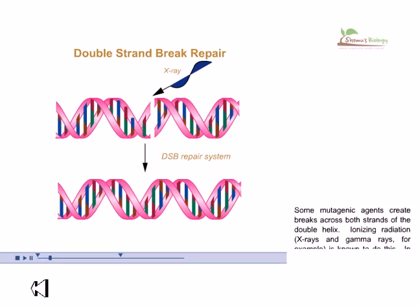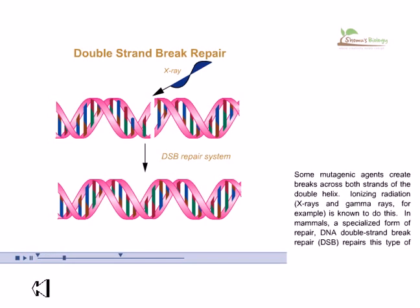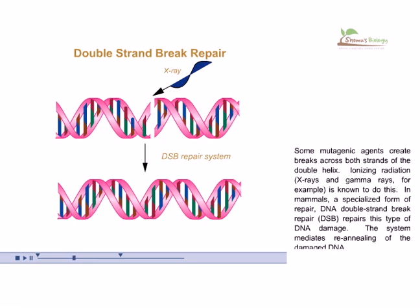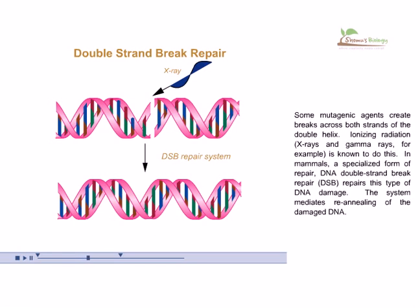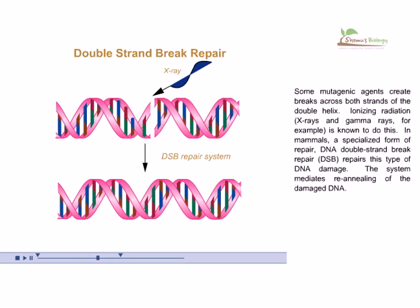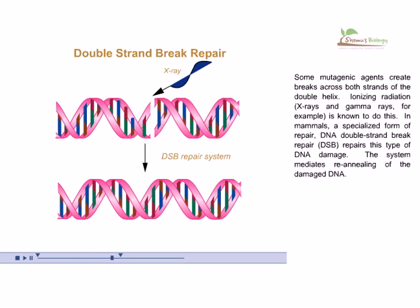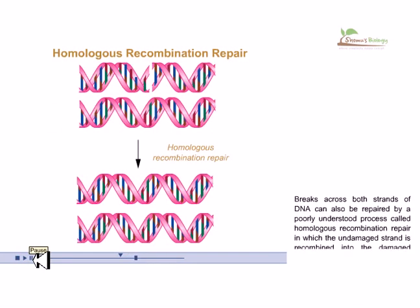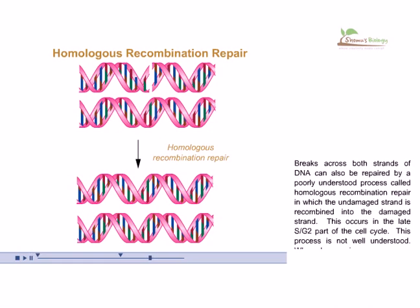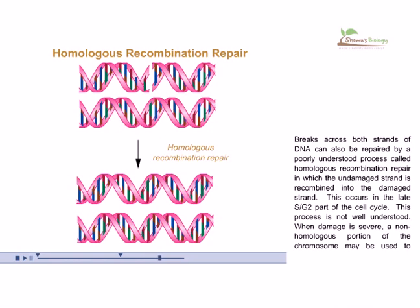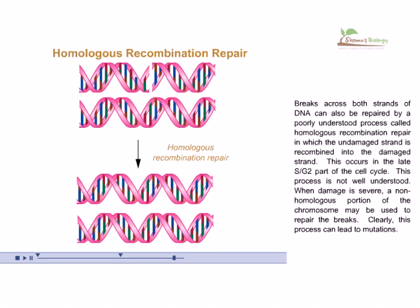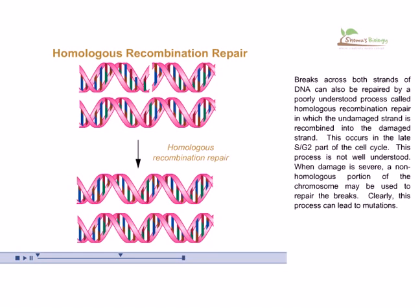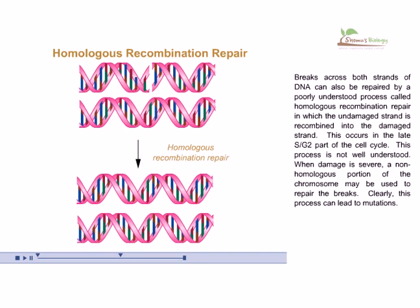Some mutagenic agents create breaks across both strands of the double helix. Ionizing radiation, such as X-rays and gamma rays, is known to cause this. In mammals, a specialized form of repair called DNA double-strand break repair (DSB repair) exists to cope with this problem. Breaks across both strands of DNA can also be repaired by homologous recombination repair, in which the undamaged strand is recombined into the damaged strand. This occurs during the late S/G2 transition of the cell cycle.